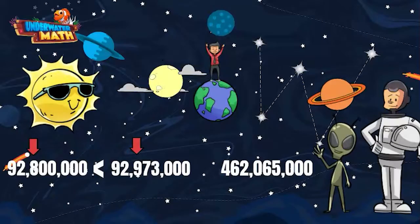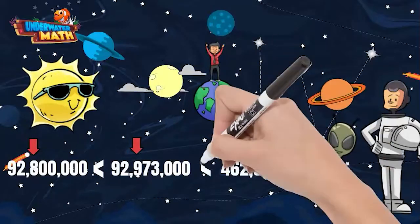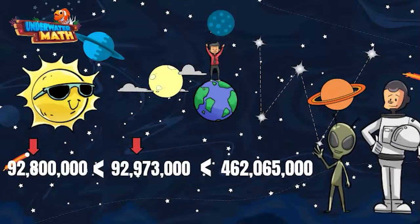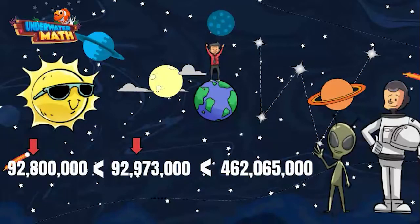We can put 92,800,000 at the beginning because it is the smallest number. This statement now reads: 92,800,000 is less than 92,973,000, which is less than 462,065,000.